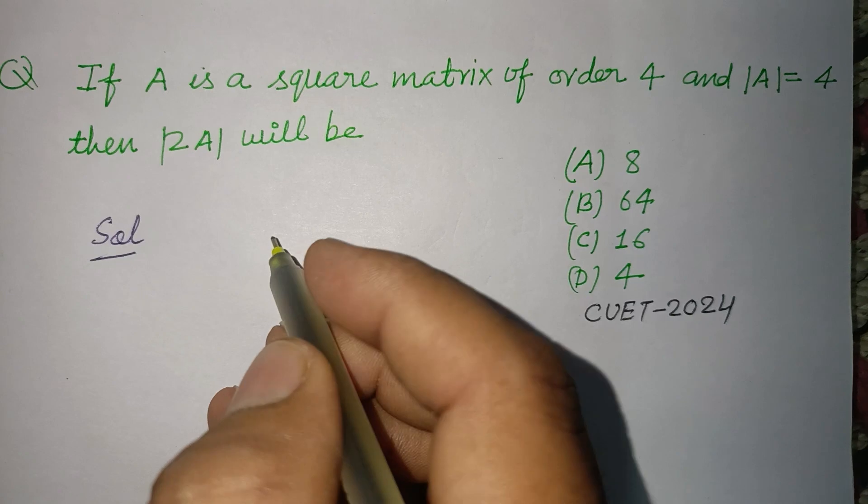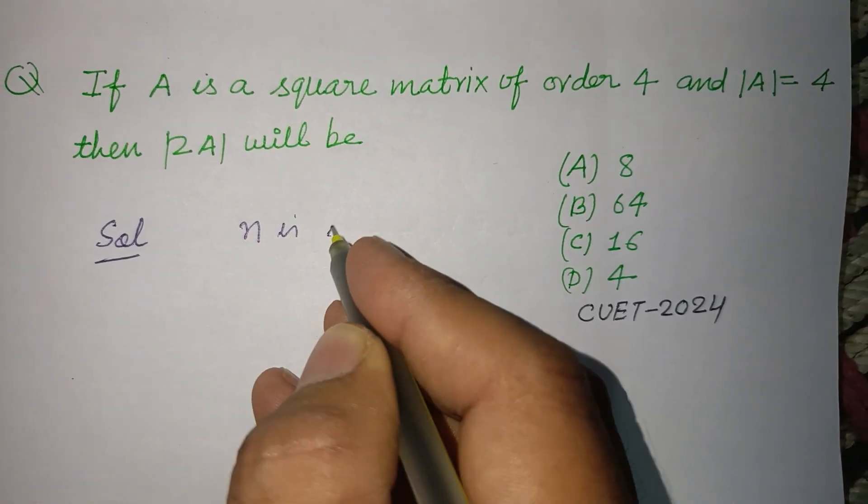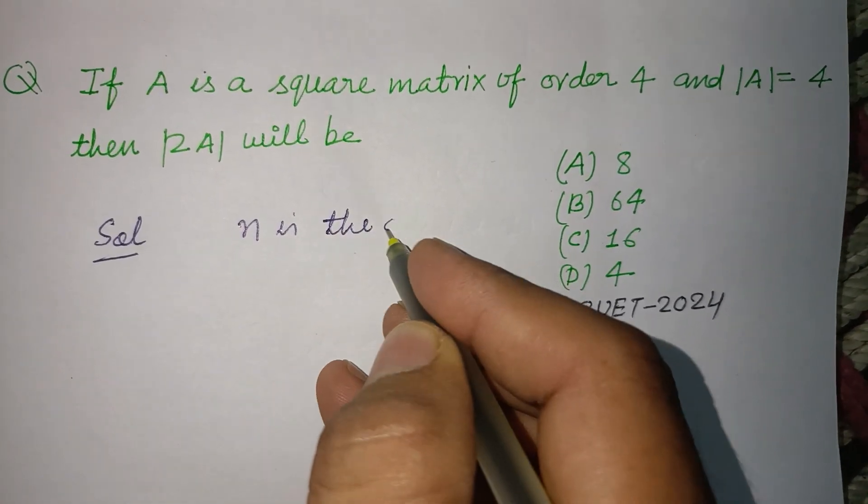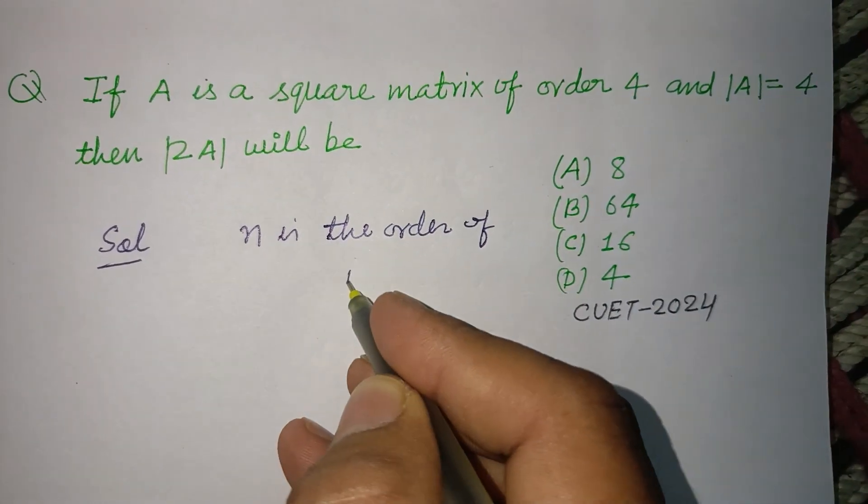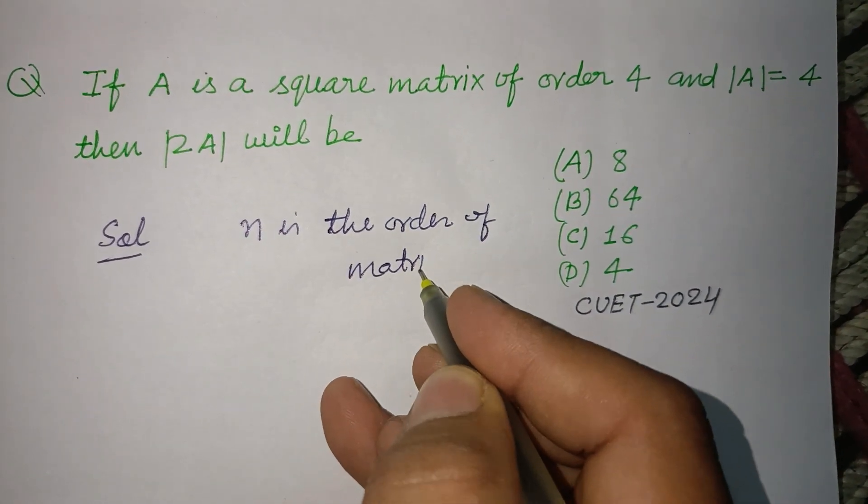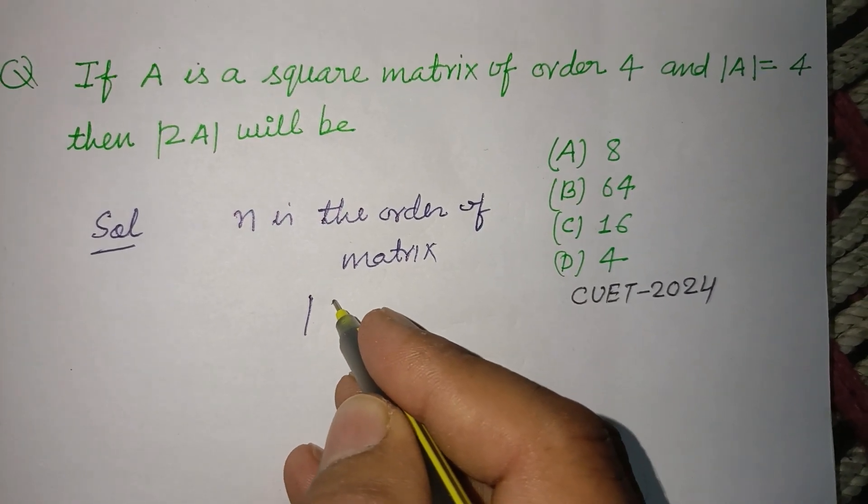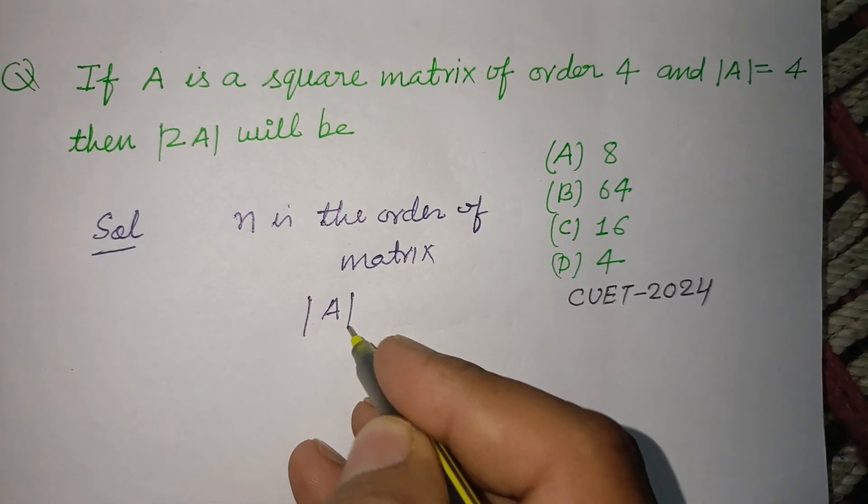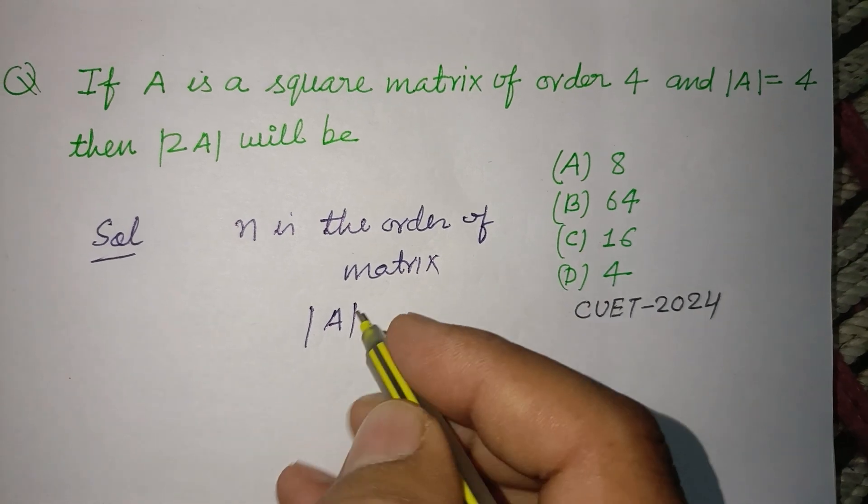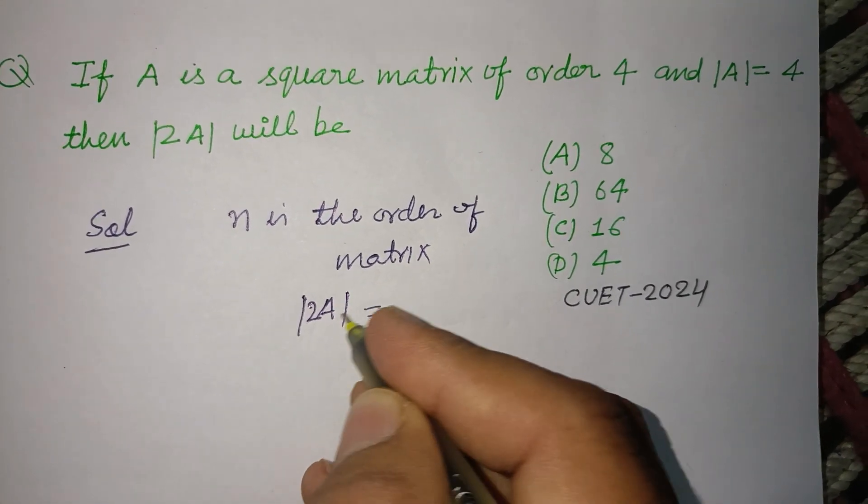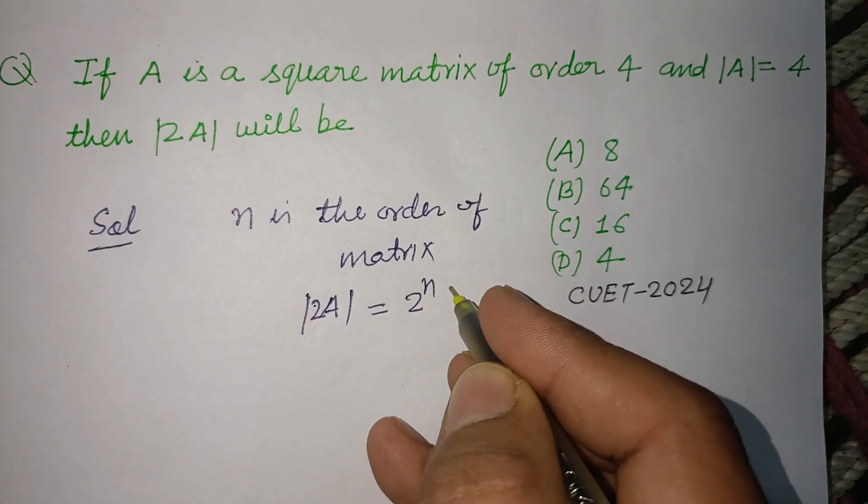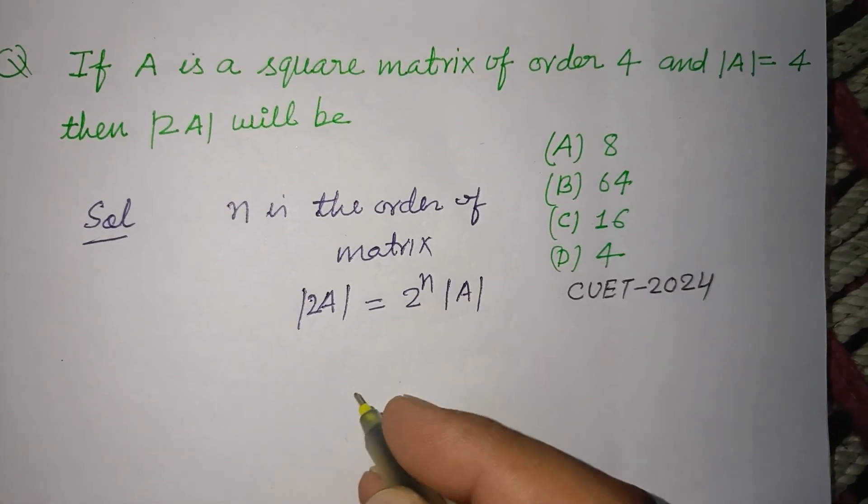So students, if n is the order of the matrix, then determinant of A, if we take 2A, this will be 2 to the power n times the determinant of A.